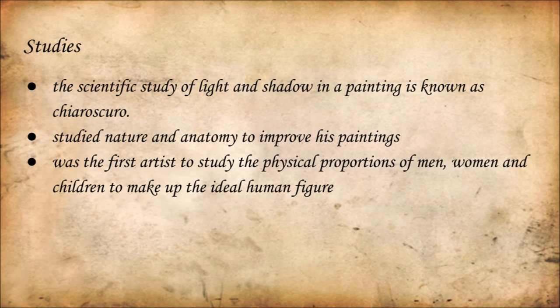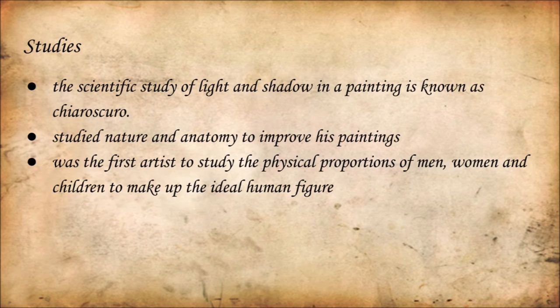Leonardo da Vinci established that the scientific study of shadow applied in painting is known as Chiaroscuro. He also studied nature and anatomy to improve his paintings, since he thought that helped him know more about art. Da Vinci was also the first artist to study the physical proportions of men, women, and children to make up the ideal human figure.